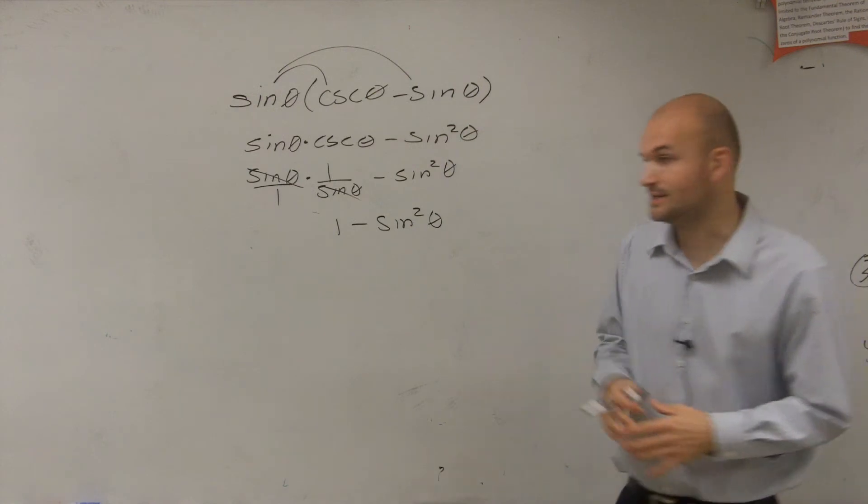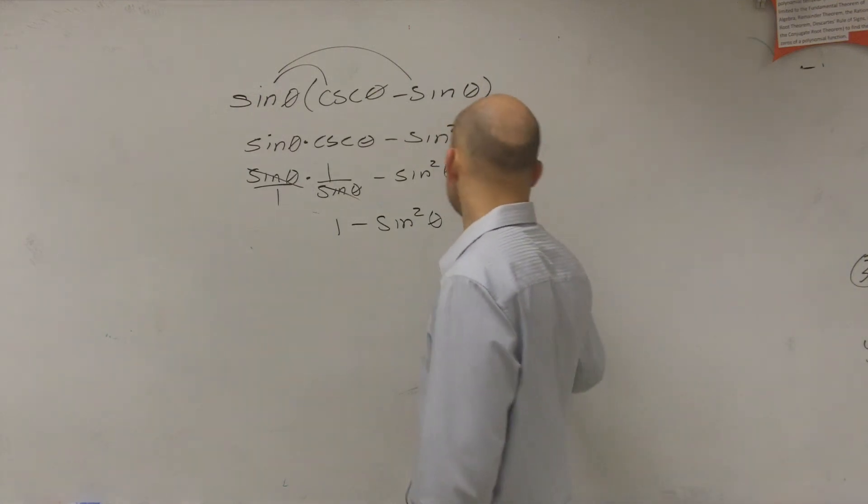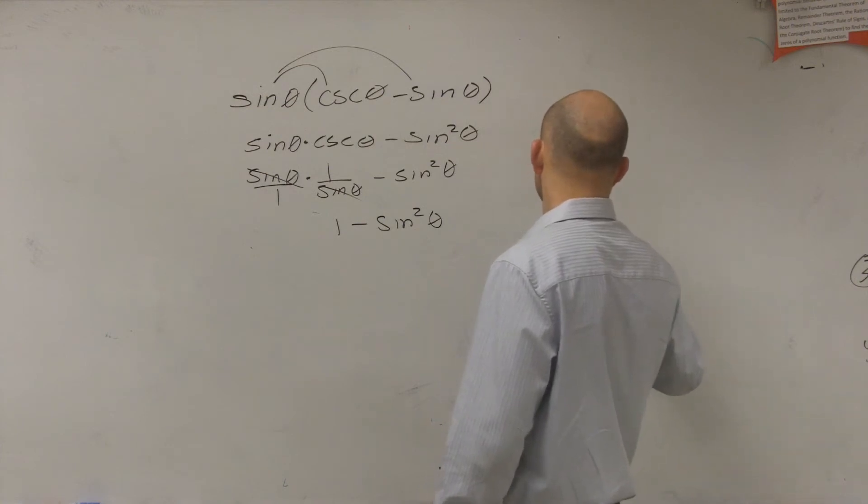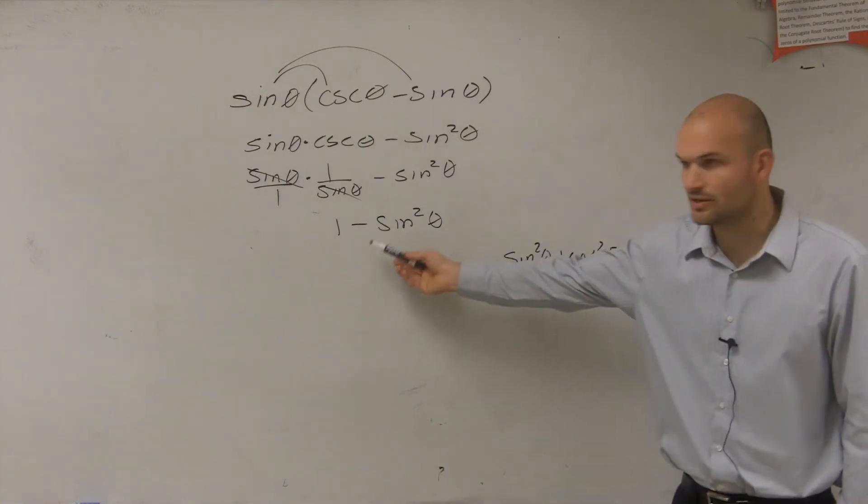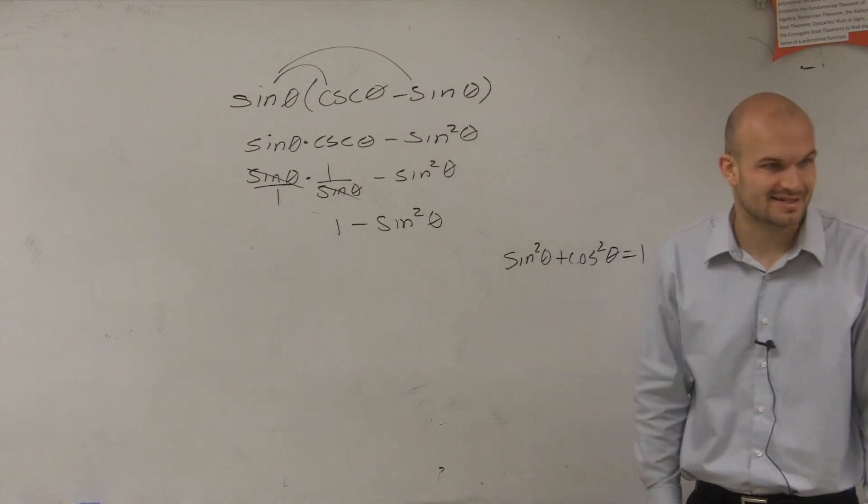And we just went through the Pythagorean identities. The first one we talked about was sine squared of theta plus cosine squared of theta equals 1. So that's pretty close to that. But that says 1 minus sine squared.